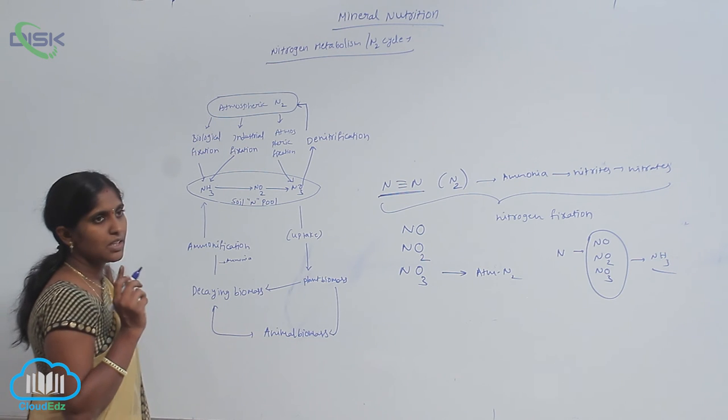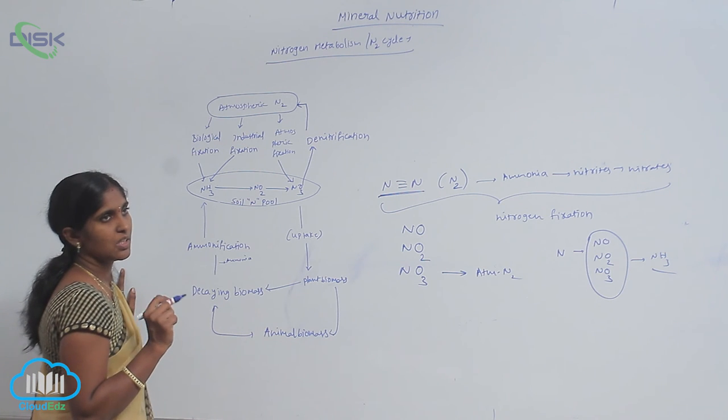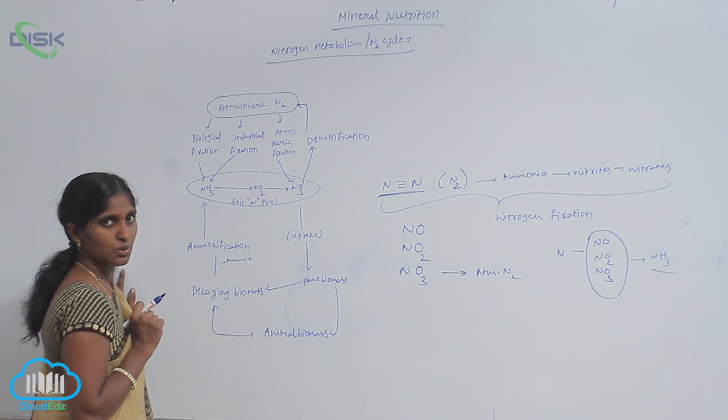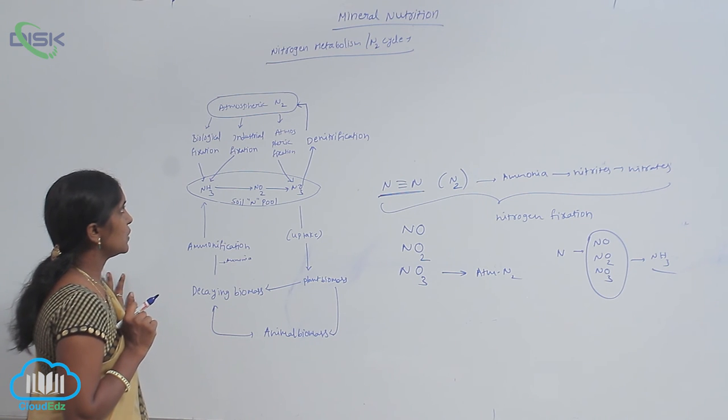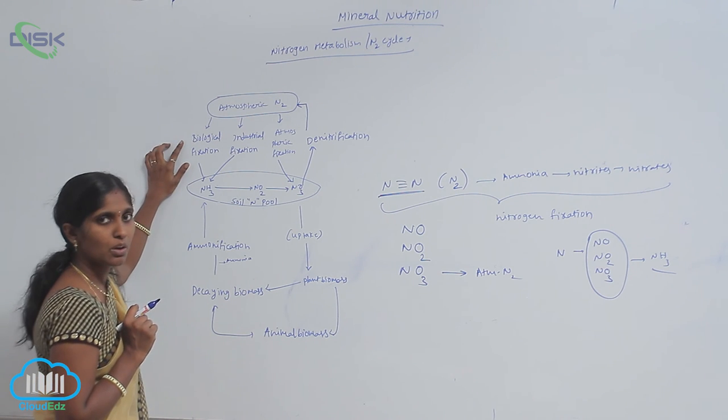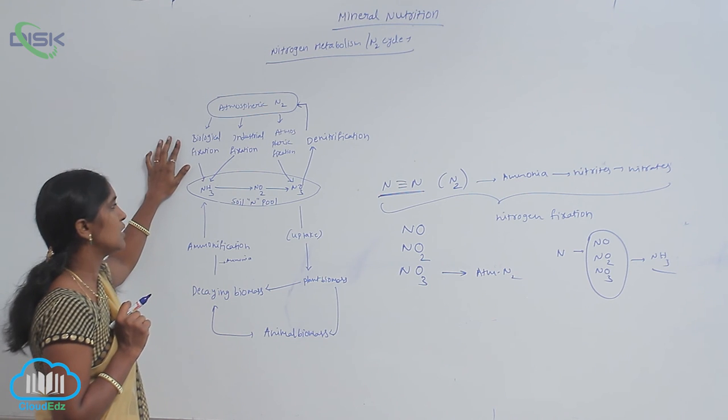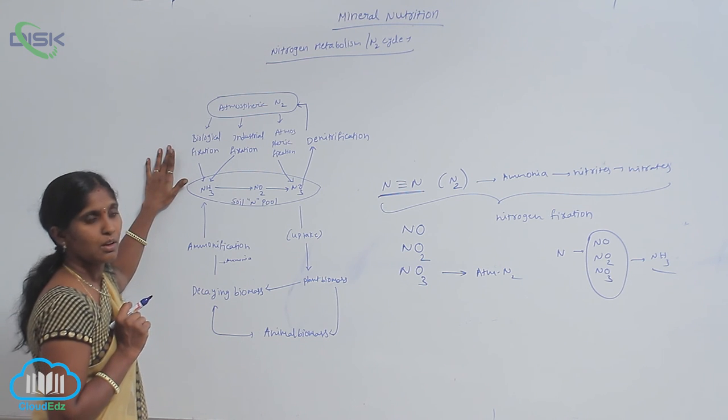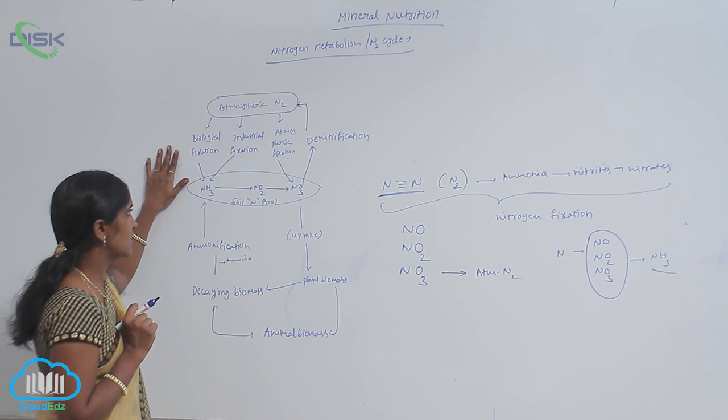The basic source of nitrogen is atmospheric nitrogen. The atmospheric nitrogen is converted into ammonia by using microorganisms. That is called biological fixation.